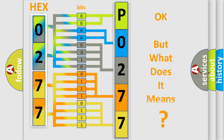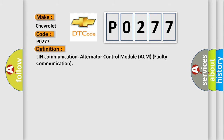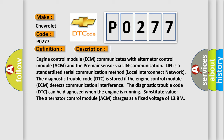We now know in what way the diagnostic tool translates the received information into a more comprehensible format. The number itself does not make sense to us if we cannot assign information about what it actually expresses. So, what does the diagnostic trouble code P0277 interpret specifically for Chevrolet? The basic definition is: LIN communication alternator control module ACM faulty communication. The engine control module ECM communicates with the alternator control module ACM and the premier sensor via LIN communication.